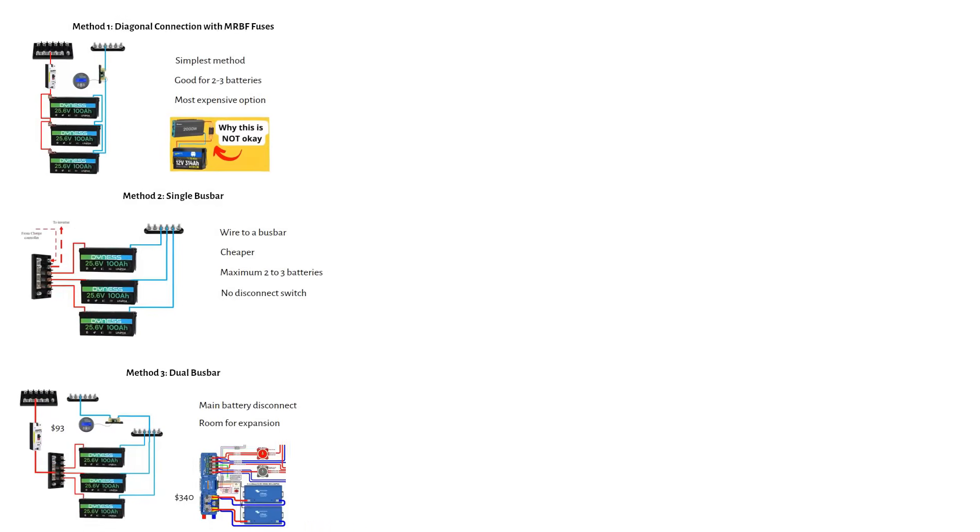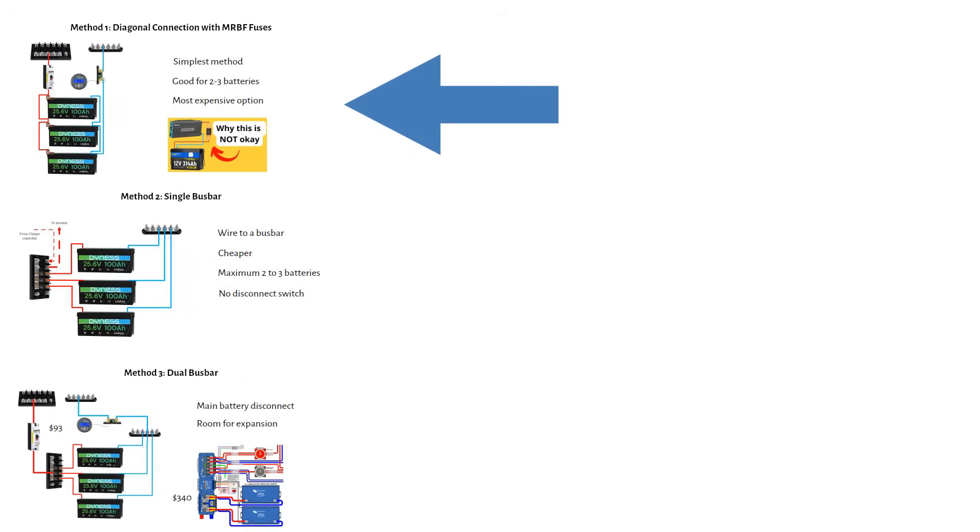So to recap, setup 1 is the easiest but most expensive. Great for small systems consisting of 2 or 3 batteries. Setup 2 is the cheapest but is limited to 2 or 3 batteries due to bus bar space. And setup 3 is your best bet for 3 or more batteries. It's organized, expandable, and reasonably priced.